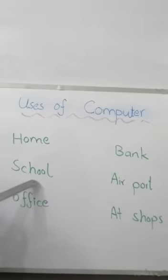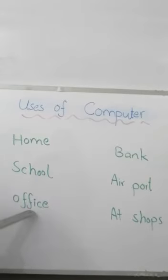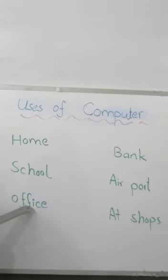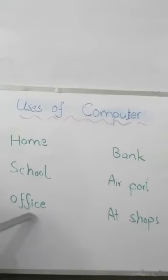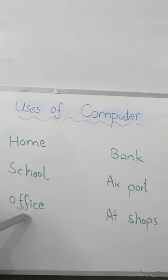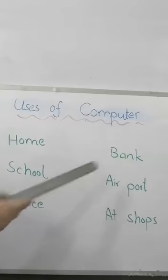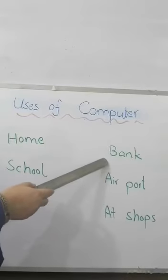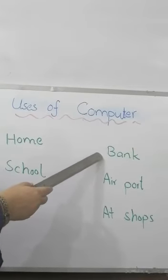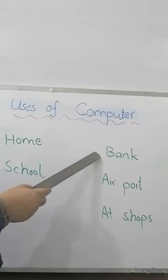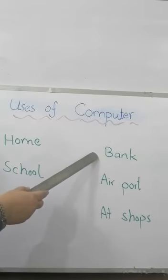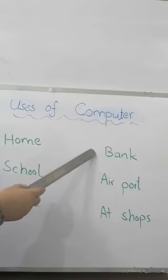In office, if your parents or mom or dad go to office, they use office in their office for documentation or for any other office work. In banks, computers use when we go to the bank to deposit money or to withdraw money. In banks, computers are used at the cash counters.